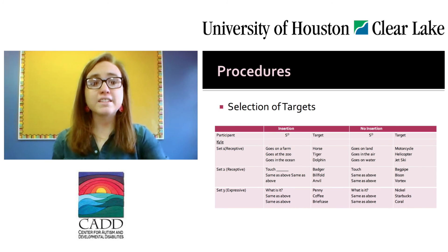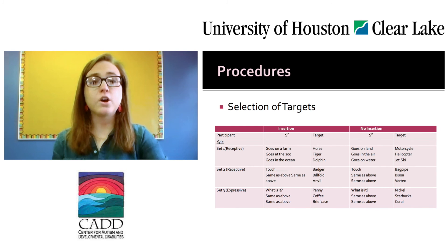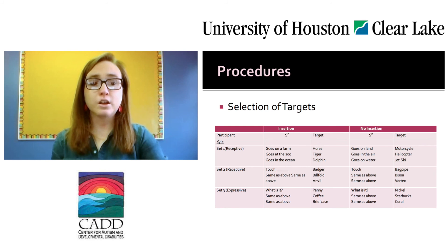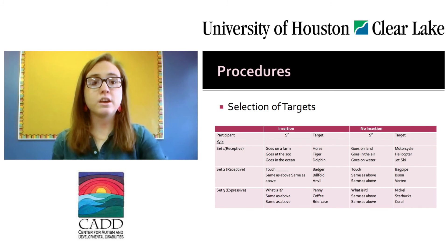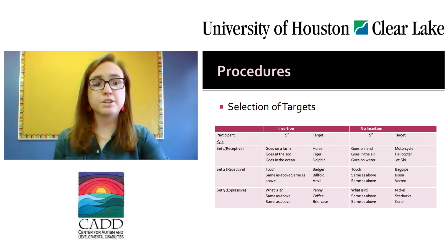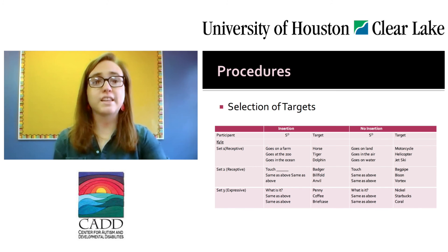Prior to the study, I selected 18 training targets for each child by examining a list of the child's future acquisition goals prepared by the clinic therapist or the results of a recently completed assessment of basic language and learning skills. Potential targets were assessed prior to the study and selected if correct responding remained below chance levels. Six targets were assigned to each of three sets, and three targets from each set were randomly assigned to each of the two teaching conditions. However, we deviated from random assignment in some cases to control for differences in target difficulty, examining and reassigning targets based on the shape and complexity of related stimulus material or the number of syllables in the target name.